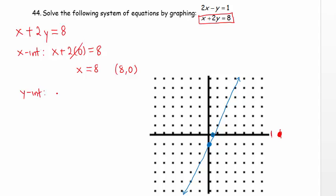For the y-intercept, we let x equals 0. So we have 0 plus 2y equals 8. 2 times y equals 8. Y must be 4. 0 comma 4 is the y-intercept.